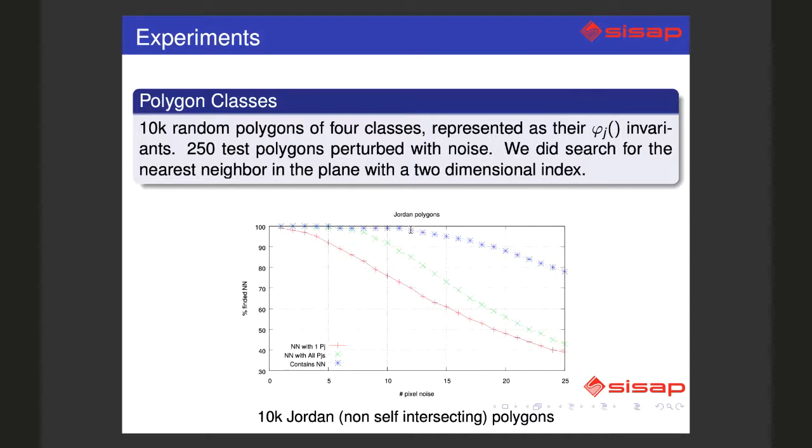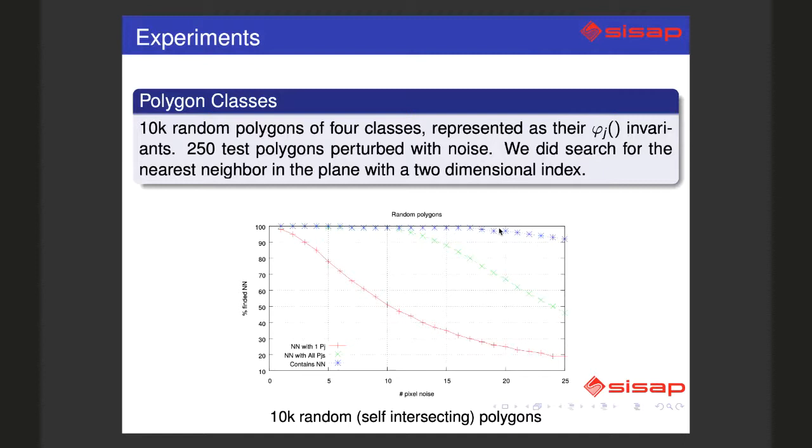And for random polygons we have a lot of resistance to noise. Like 20 pixels would be okay, and even with 25 pixels we retrieve 90% of the points.